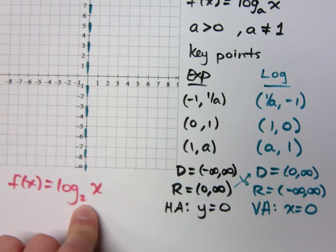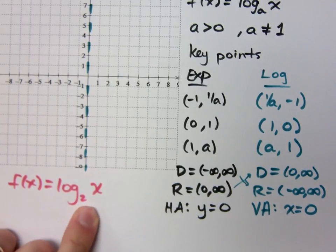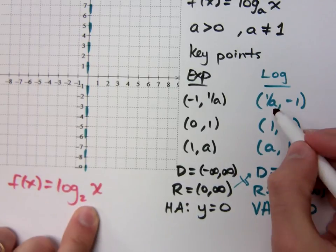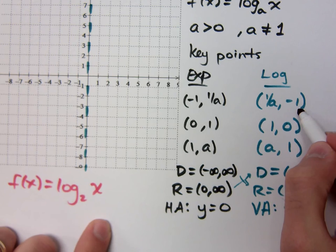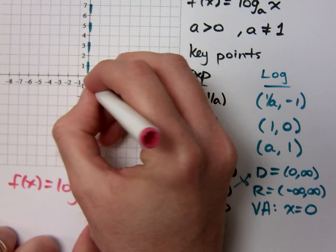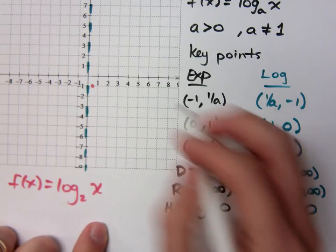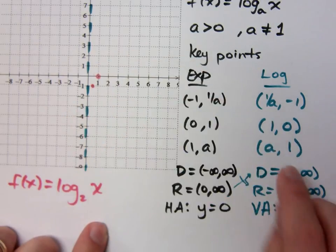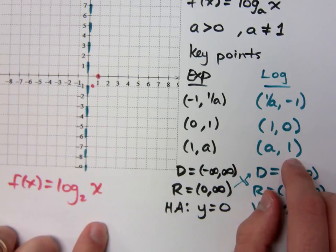I wrote this here, it's pretty in pink. So my logarithmic function says if you do 1 half comma negative 1, that's a point. So here's 1 half comma negative 1. You always have the point 1, 0. So here's 1, 0. And this says if you do your base comma 1, that's a point. So what's my other point?